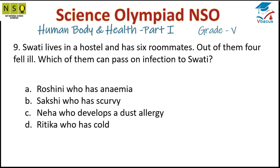Question number nine: Swati lives in a hostel with six roommates, four of whom fell ill. Roshni has anemia — cannot pass to others. Sakchi has scurvy — also cannot be passed. Neha has a dust allergy — allergy also cannot be passed. Rithika has a cold — the cold can be passed to others. So option D is correct.